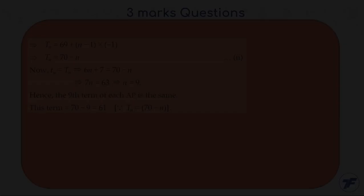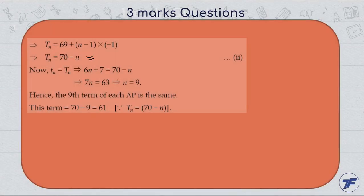So Tn for the second AP and small tn for the first AP - now we put them equal to find the value of n. The terms of both APs will be the same. Now let us find out the 9th term.